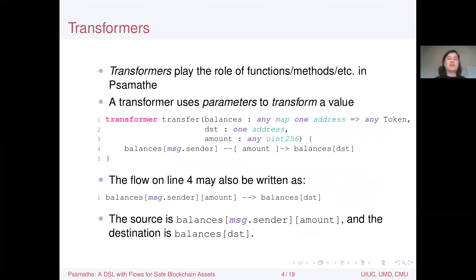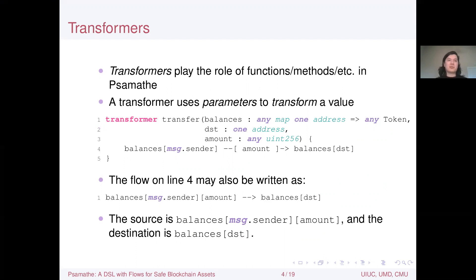Transformers in Samathi play the role of functions, methods, or procedures. Transformers use parameters to transform some value — typically the last value in the argument list, but it could be any of them. The parameters are auxiliary information used to perform computation. In this example, we have a transformer called transfer, which is meant to send some tokens from one account to another.